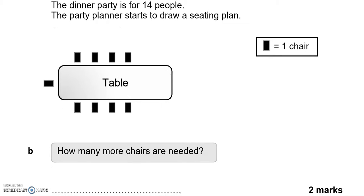The dinner party is for 14 people. The party planner starts to draw a seating plan with a table and chairs. The plan shows one chair already. How many more chairs are needed? Counting up: 1, 2, 3, 4, 5, 6, 7, 8, 9 — to get to 14 we need five more chairs.